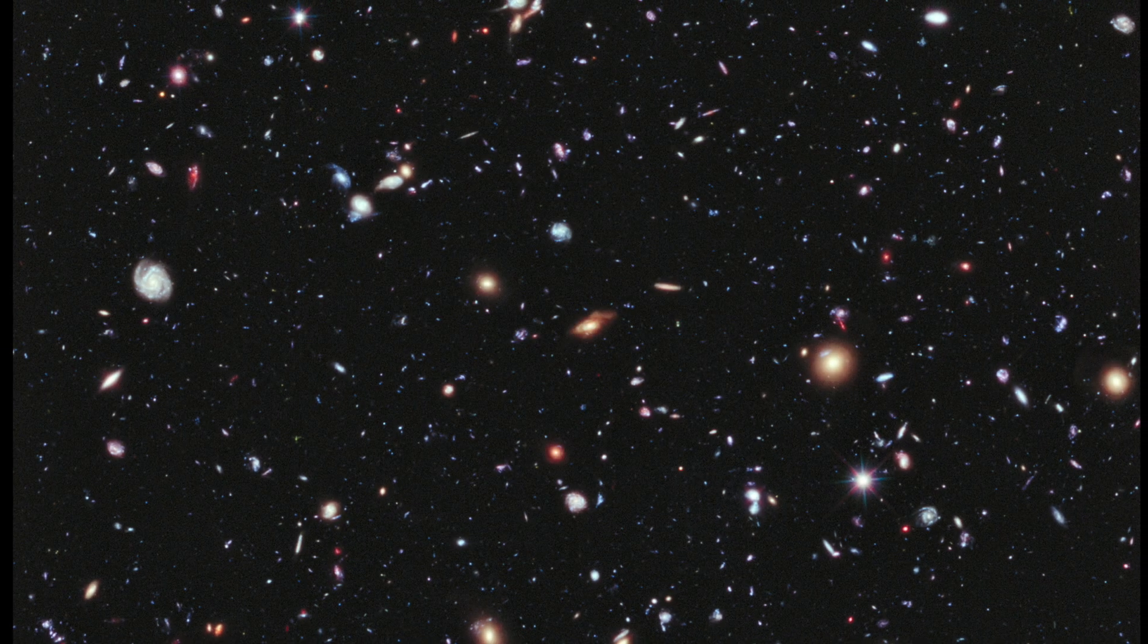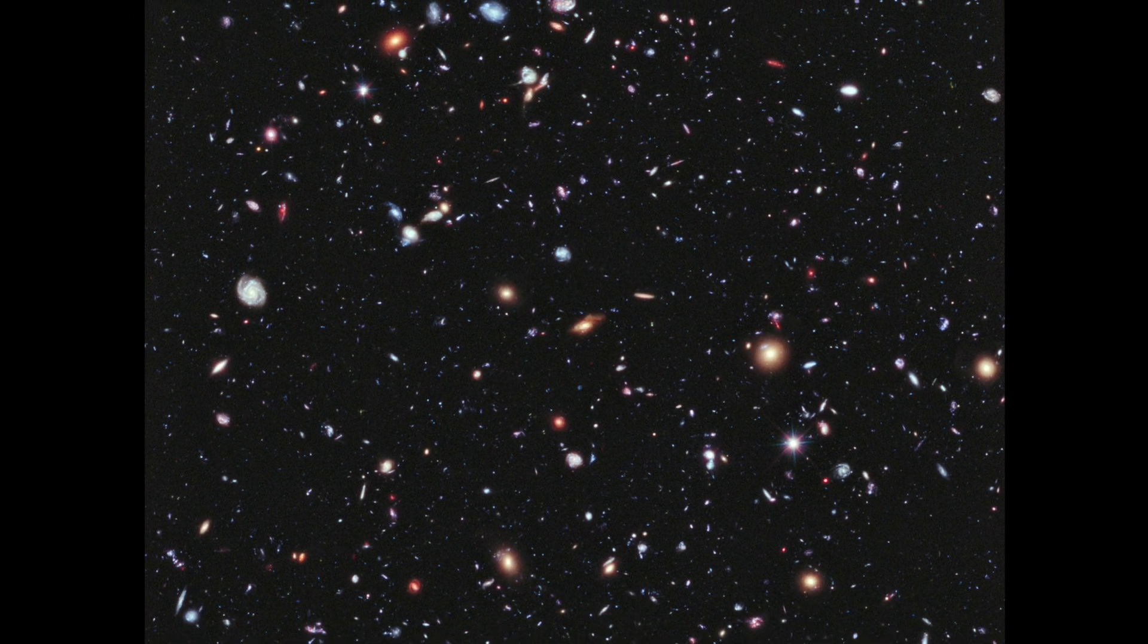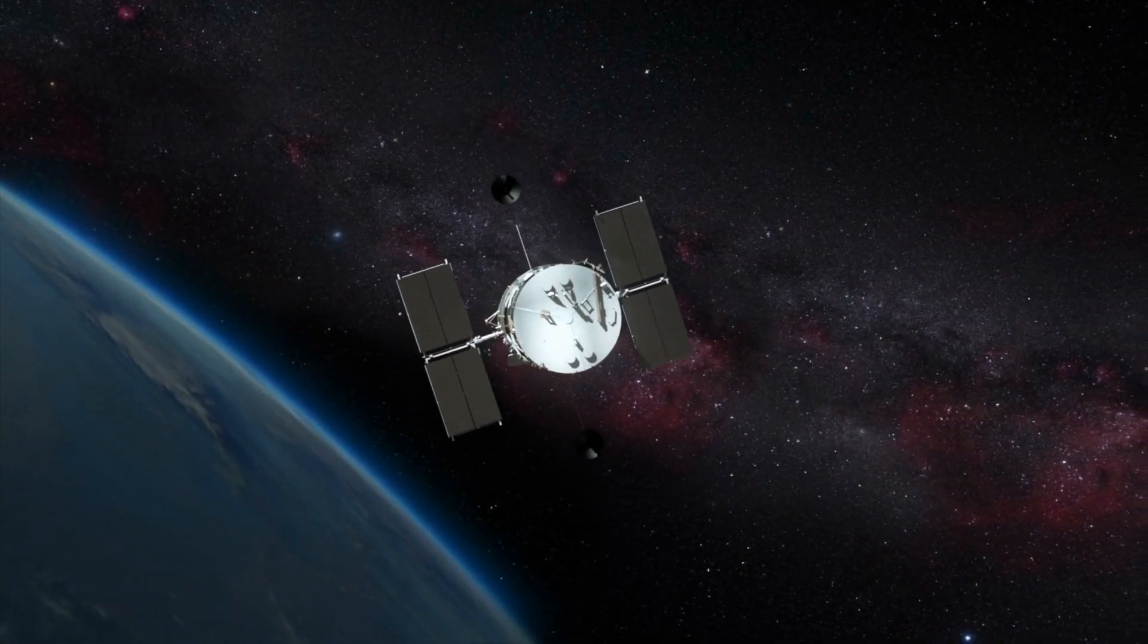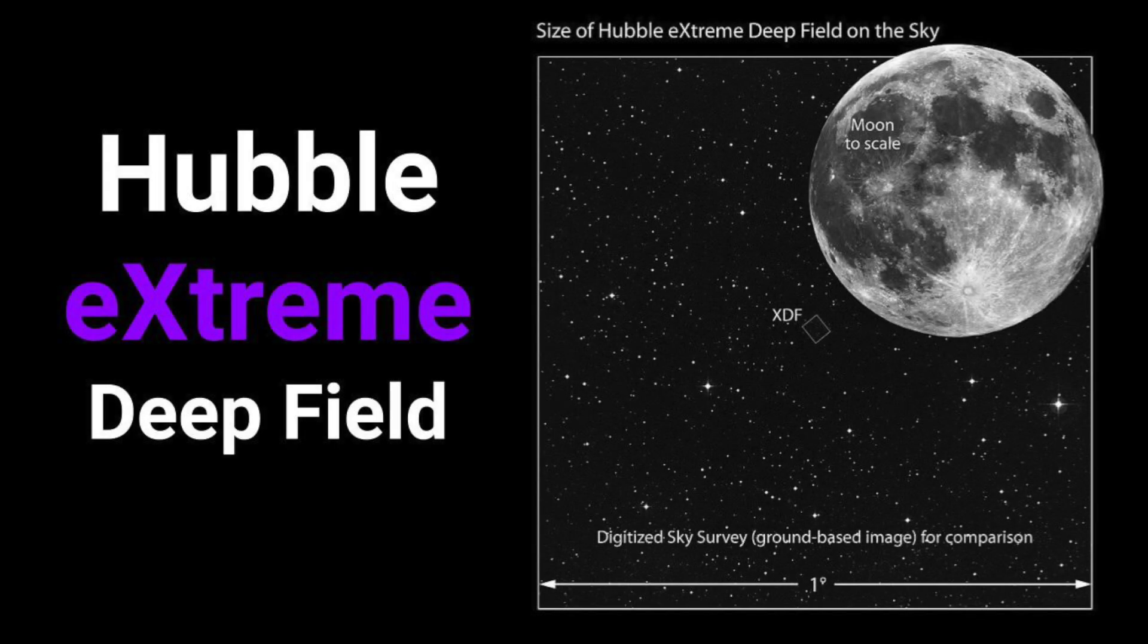The Hubble Extreme Deep Field is an even deeper version of the famous Hubble Ultra Deep Field. Taken in 2012, the Extreme Deep Field combines 10 years of pictures from the Hubble Space Telescope, all focused on a tiny spot in the sky in the constellation Fornax, the same area as the Ultra Deep Field, but with even more data added.